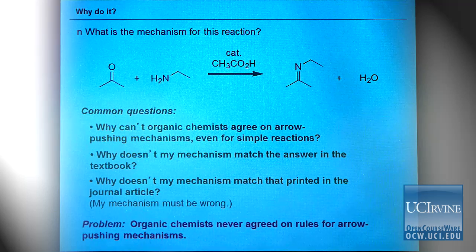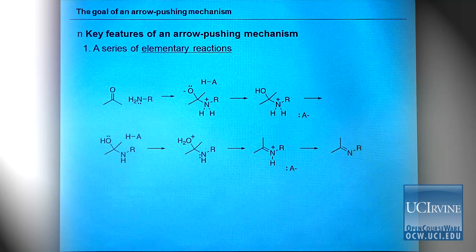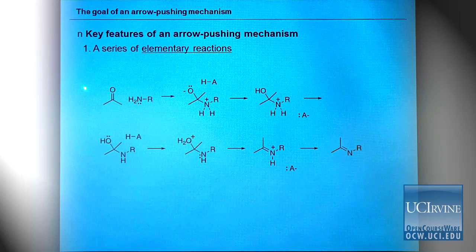We're going to attempt to resolve this problem. The first and most important feature of an arrow pushing mechanism is that you need to break a reaction—a chemical transformation—into a series of elementary reactions. I've taken that imine-forming mechanism and broken it down into six elementary reactions.